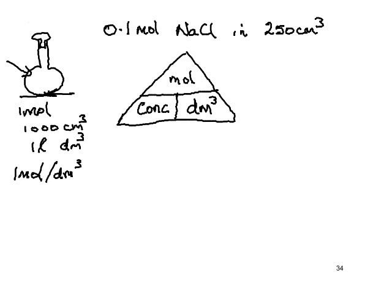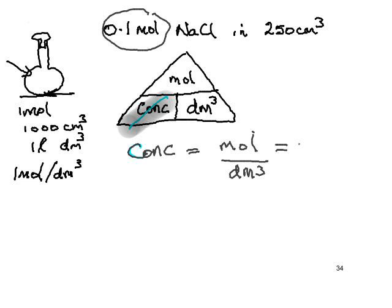This is a rearrangement triangle. If I want to find out what one of these is in terms of the other two, I cover what I want and read what's left. In this case, I would be covering concentration. Concentration is equal to the number of moles divided by the number of cubic decimetres. The number of moles is 0.1 divided by the volume in cubic decimetres.